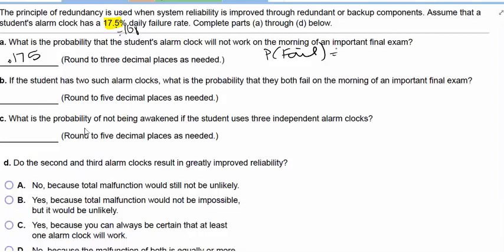If the student has two alarm clocks, what's the probability that they both fail? What's the probability that they both fail?